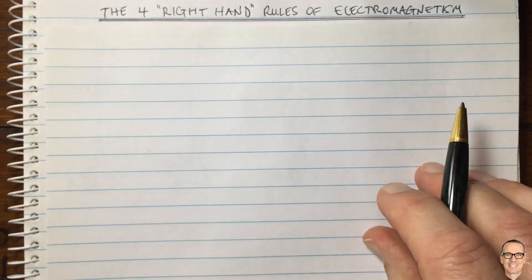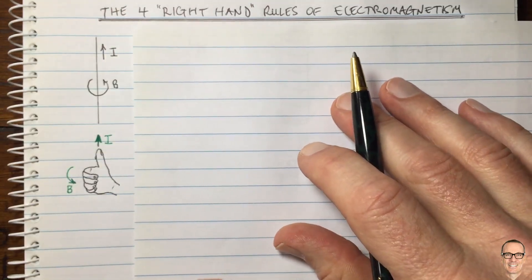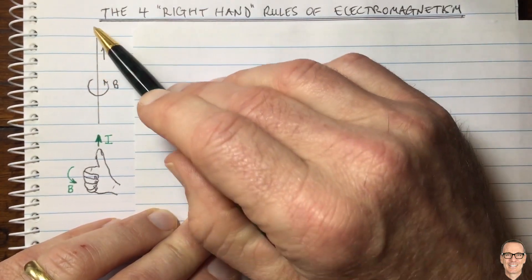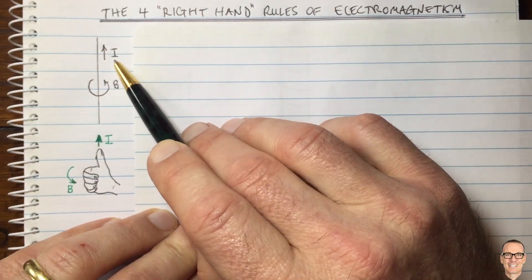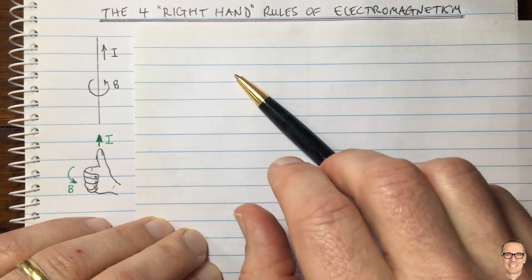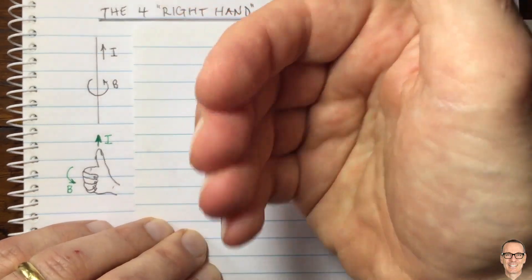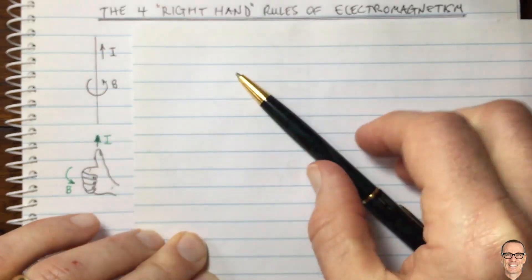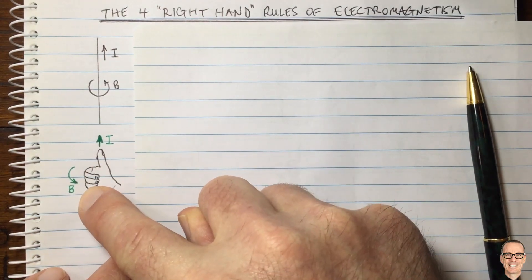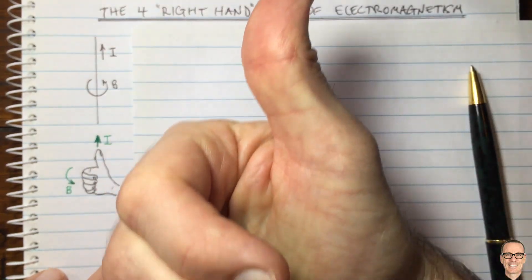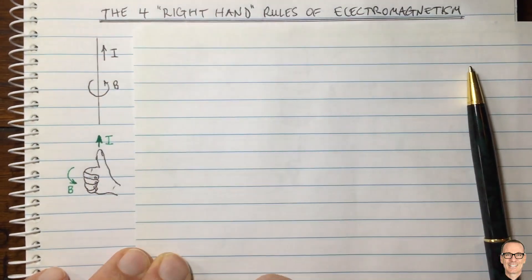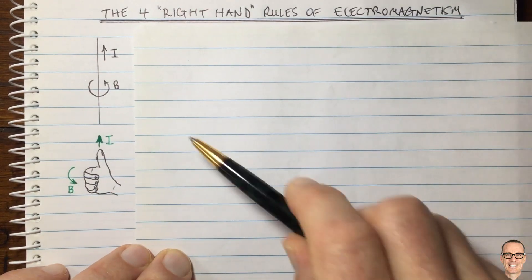The first rule relates to having a current in a wire. Here we have a wire and there's a current in that wire. What that current does is generate a magnetic field around the wire. If you put your thumb in the direction of the current, then curling your fingers around will show the direction of the magnetic field that results from having that current in the wire.